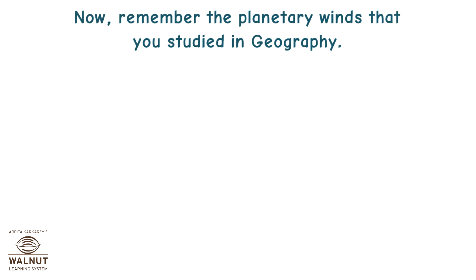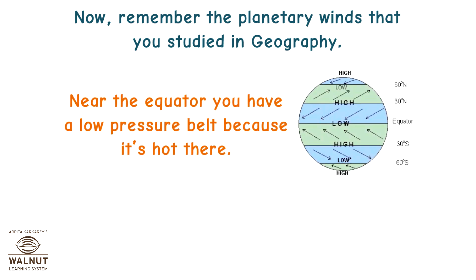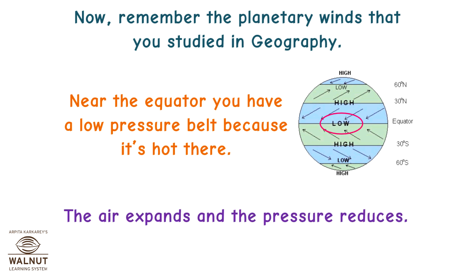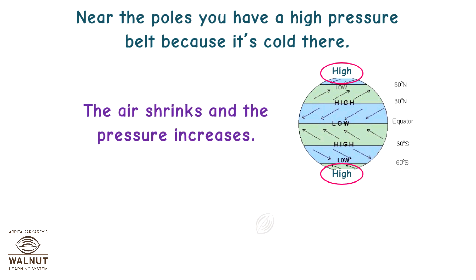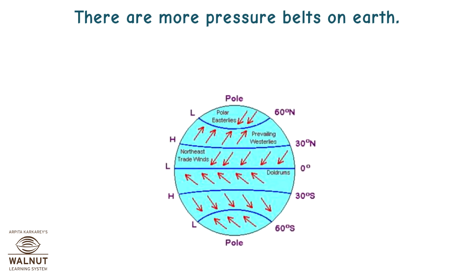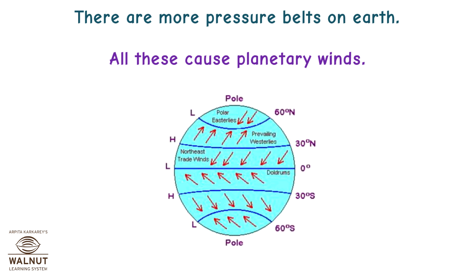Remember the planetary winds you studied in geography. Near the equator, you have a low pressure belt because it's hot there — the air expands and the pressure reduces. Near the poles, you have a high pressure belt because it's cold there — the air shrinks and the pressure increases. There are more pressure belts on Earth, and all these cause planetary winds.